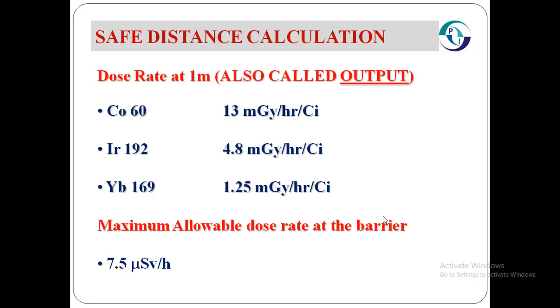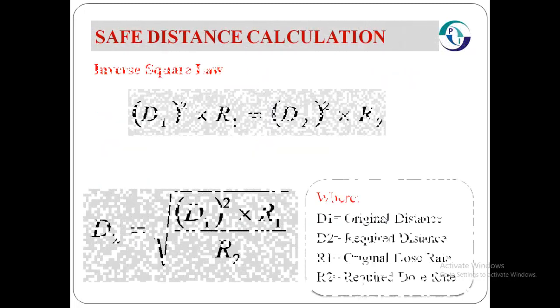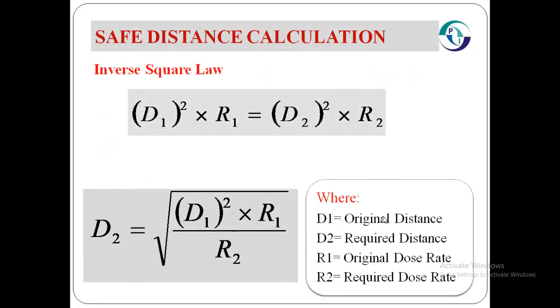The maximum allowed dose rate at the barrier is 7.5 microsievert per hour. It means where we have to make the barricade, the intensity of the radiation should be 7.5 microsievert per hour. To calculate the safe distance, we must use the inverse square law.